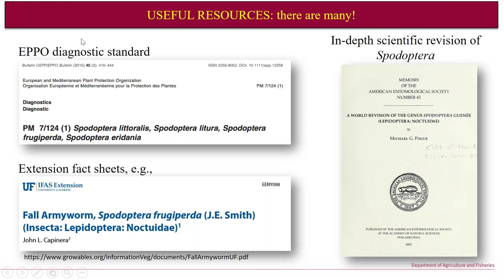There are many useful resources. The EPPO diagnostic standard, from which many of the photos in this presentation were sourced, is a good go-to — bear in mind it has different species and does not include the Australian ones, but it has excellent images and reference to molecular tests including real-time PCR. There are also many extension fact sheets out there, as this is a worldwide pest; the Americans have produced many, including this example from the University of Florida. For more detail, the primary scientific literature includes an excellent 2002 world revision of the entire genus Spodoptera containing all 30 species, with images of genitalic dissections and moths.